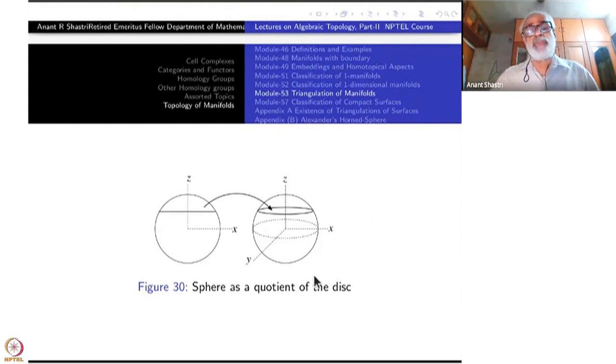So that is one case. The other case, what is the other case? The other case is when this edge is identified with that edge in the same direction. That is same thing as antipodal action. Every point here will be identified with that point.